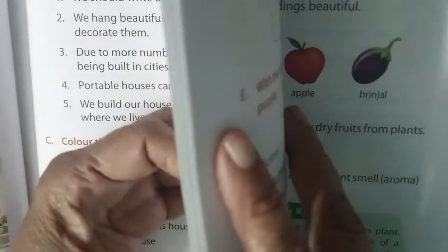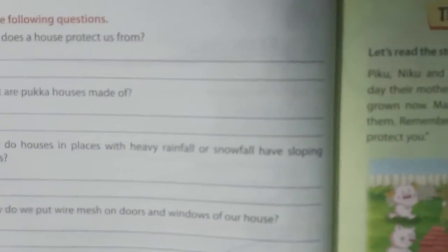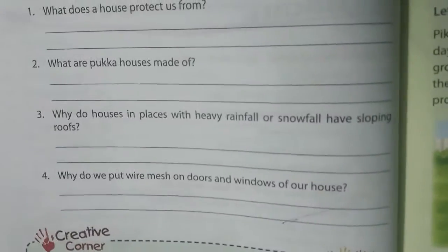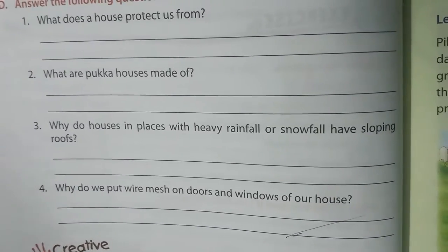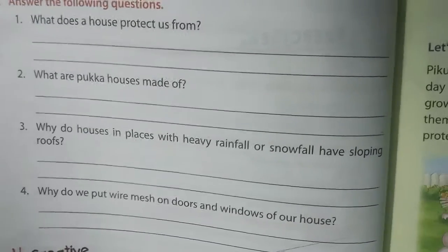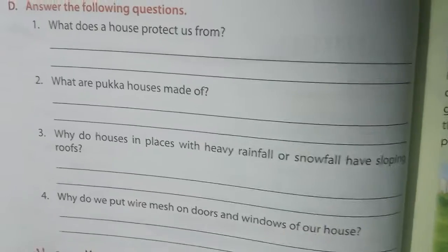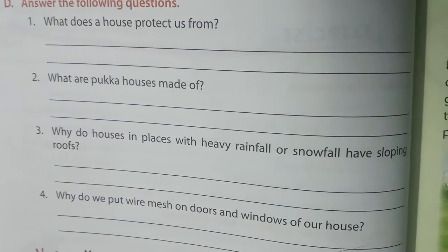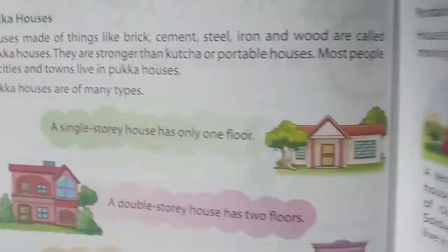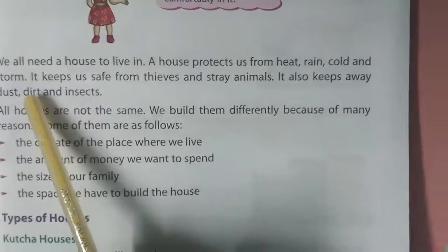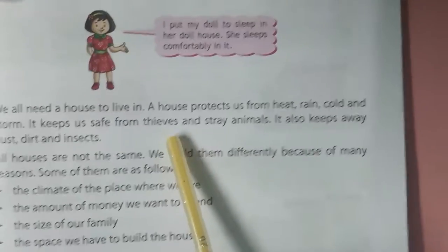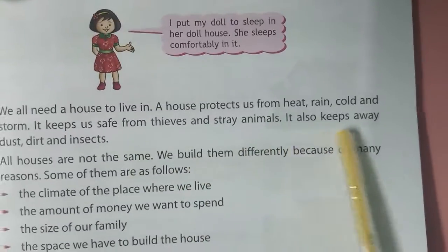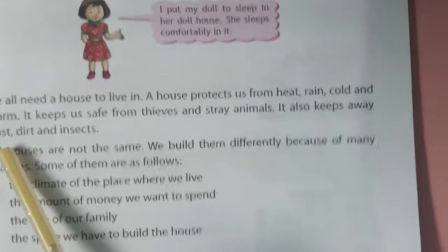Now go to the question answers on the next page. All the answers are in your book — just read the chapter two or three times and you will find them. Question 1: What does a house protect us from? A house protects us from heat, rain, cold, and storms. It keeps us safe from thieves and stray animals, and also keeps away dust, dirt, and insects.